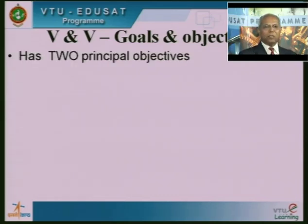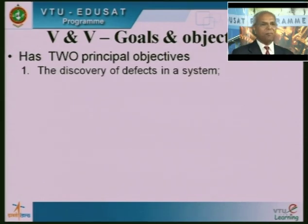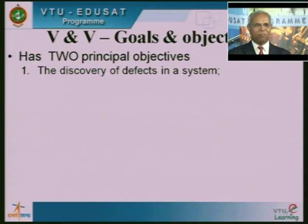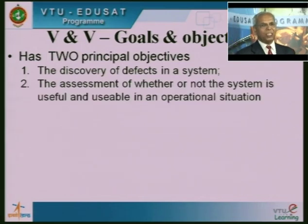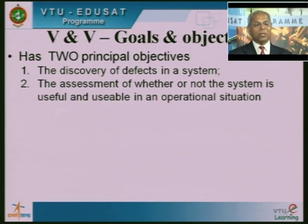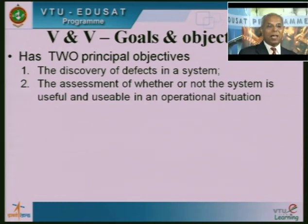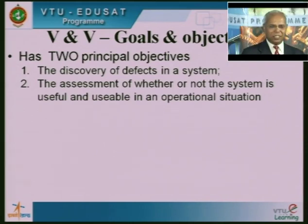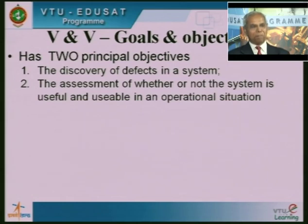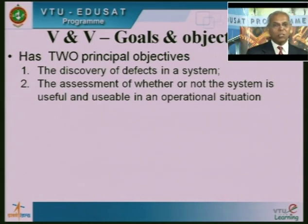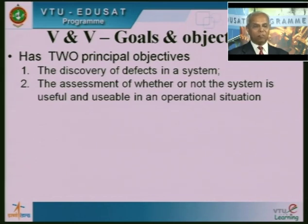There are two principal objectives in verification and validation. First is the discovery of defects in the system — whether in design or development, at any stage. Second is assessment of whether the system is useful and usable in an operational situation. The system may not have many defects, but still may not be usable because the user is not happy with it since it doesn't perform according to expectation levels. Once we eliminate defects, we also want to make sure it meets the user's needs and wishes.